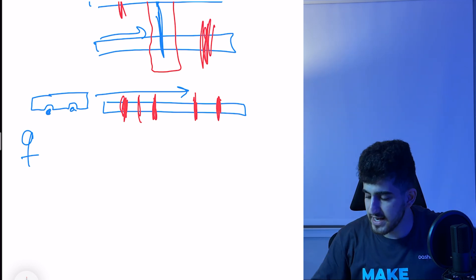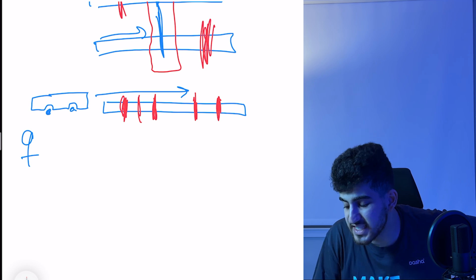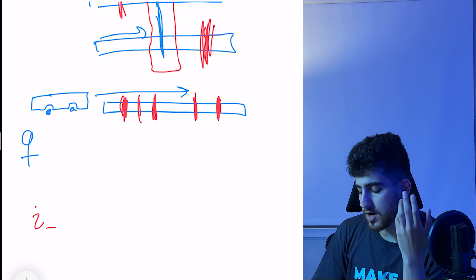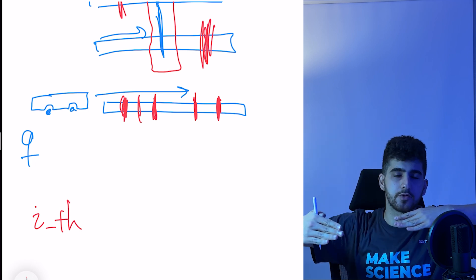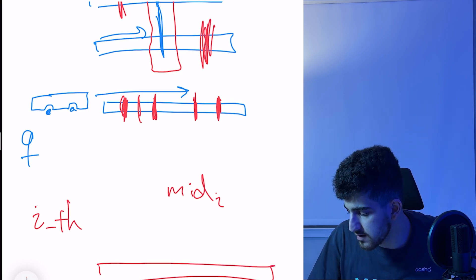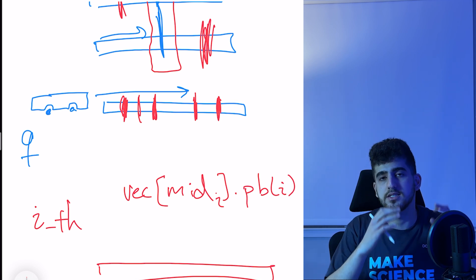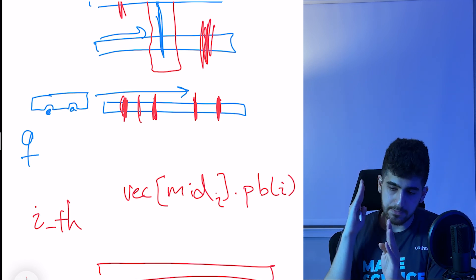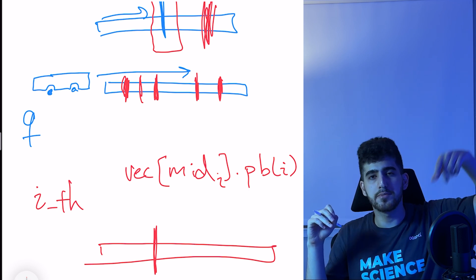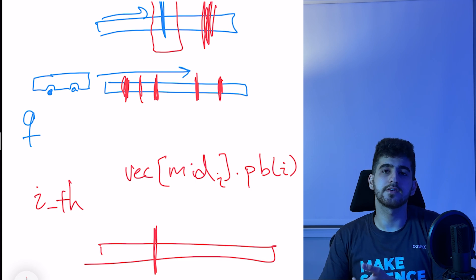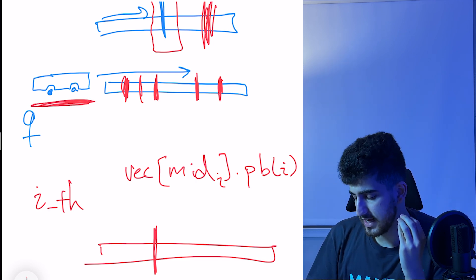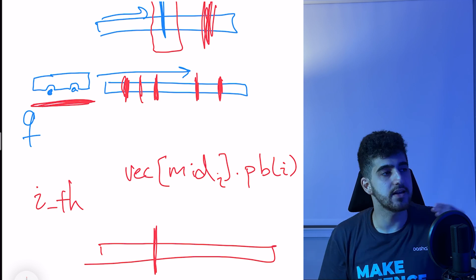This is parallel binary search. In round i, we move all queries one step forward. Each query has a current mid; we store in a vector at index mid_i the query index i. As we add edges one by one and reach a midpoint, we check all queries assigned to that point: if their connected component size satisfies Z_i, we set high = mid; otherwise we set low = mid. This processes all queries together in each round.